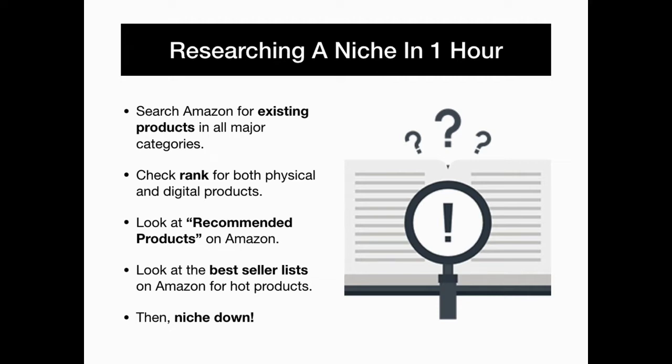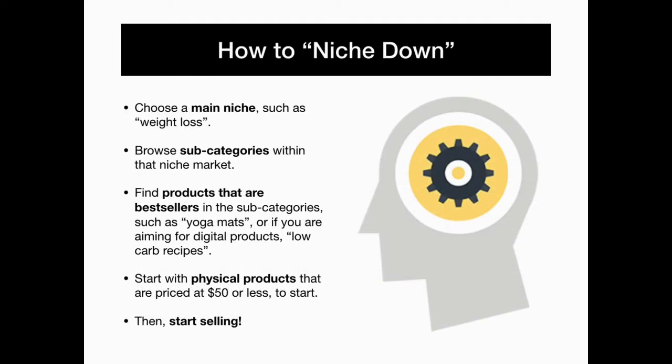Then it's time to niche down. When you niche down, you are choosing a main niche such as weight loss, then browsing subcategories within that niche market. Find products that are best sellers in the subcategories such as yoga mats, or if you're aiming for digital products, a weight loss category would be low carb recipes. If you are starting with physical products, try to promote those that are priced at $50 or less to start. Then start selling.